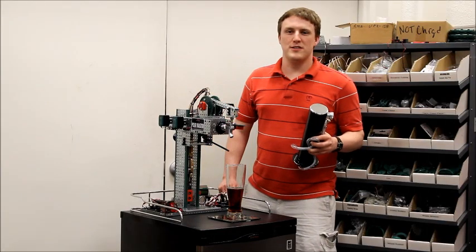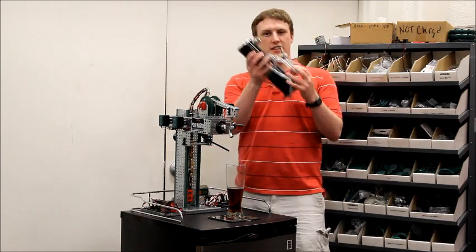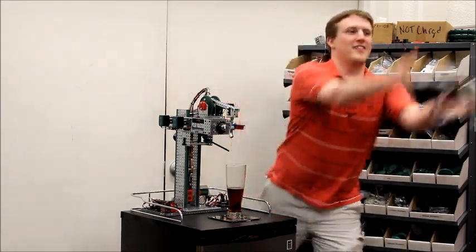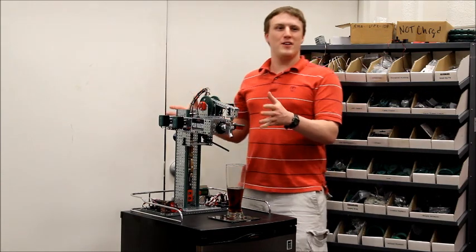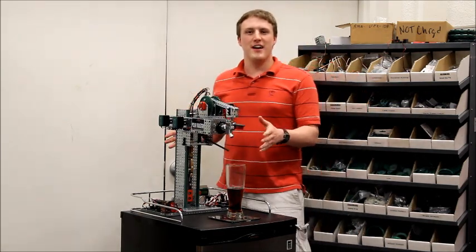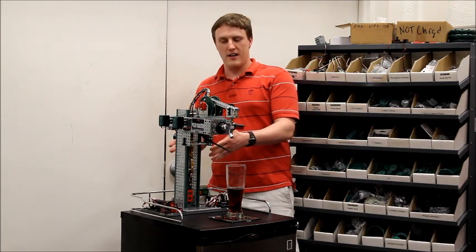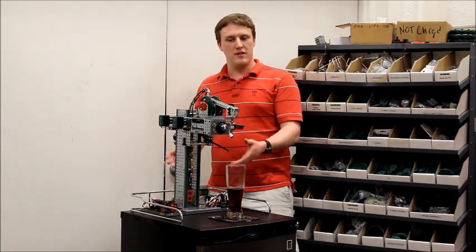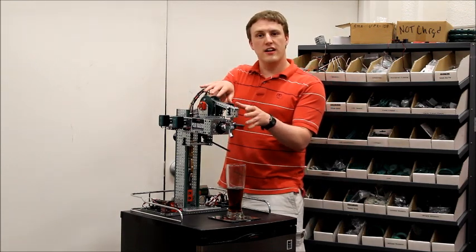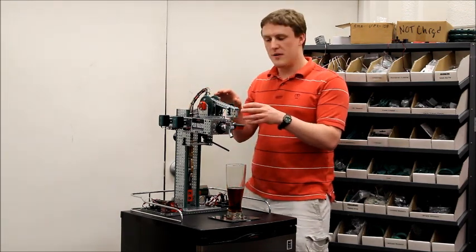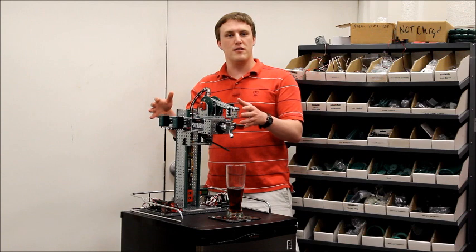To build the PoreMaster Pro, we took this existing kegerator, this tower, and we got rid of it. We built our own tower using the VEX Robotics design system. We built a rack and pinion system here to raise the carriage up and down. We had a linkage here to open and close the tap, powered it with some VEX high-strength motors.